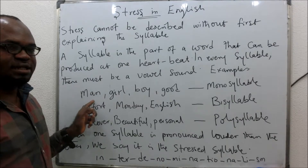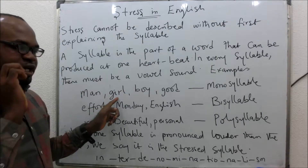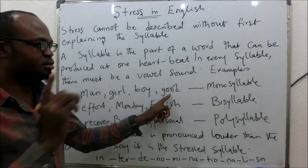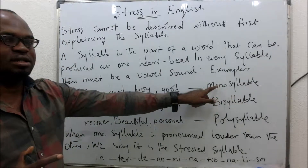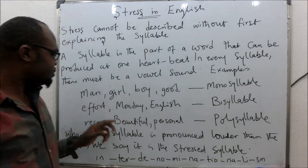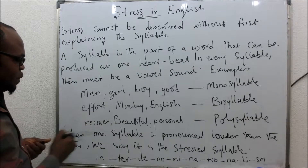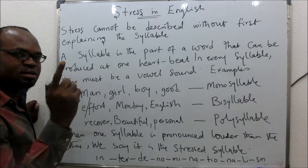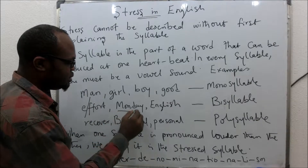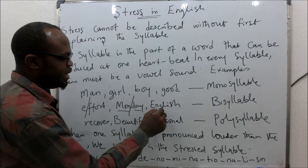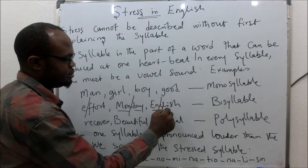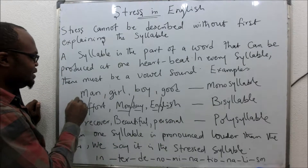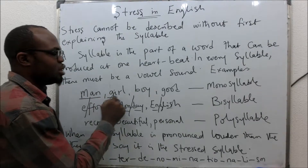If you want to pronounce the word 'man' at one go — man, girl, boy — these are monosyllabic, so you pronounce them at one go. Now the word 'effort' — you can draw a line through here — has two syllables. 'Monday' — man-day — two syllables. You see, all these ones are bisyllabic.